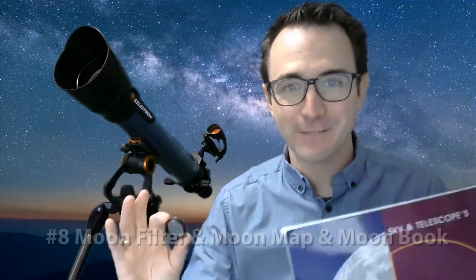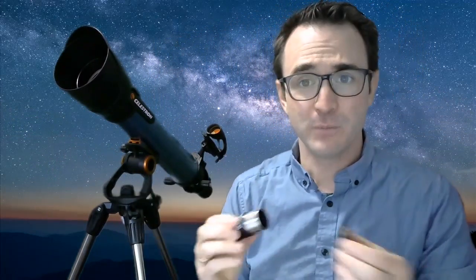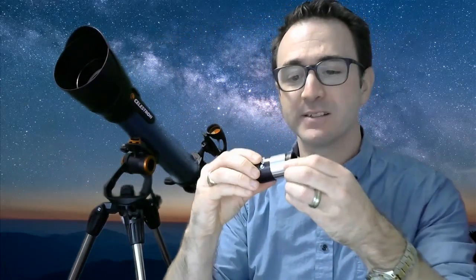Number eight, gear for exploring the moon. Now many telescopes come with some form of moon filter. But if you don't have one of these already, you can get one for around $20. These filters just reduce the brightness and glare because well, the moon is really bright. Now these moon filters screw into the back of an eyepiece like this.